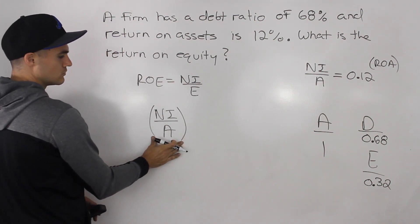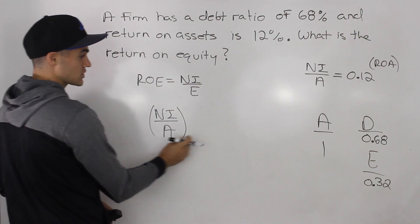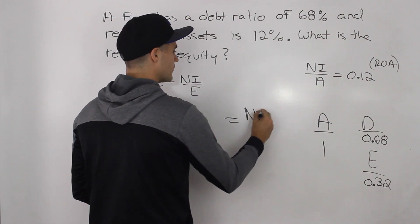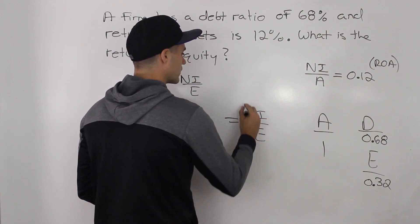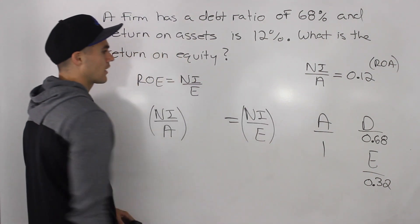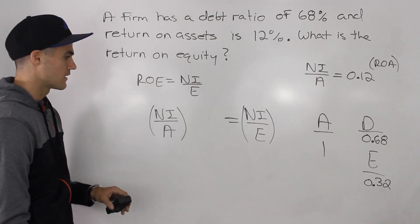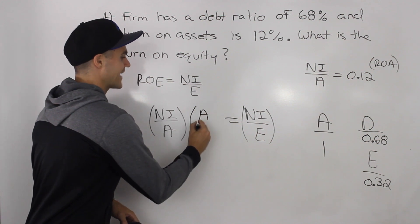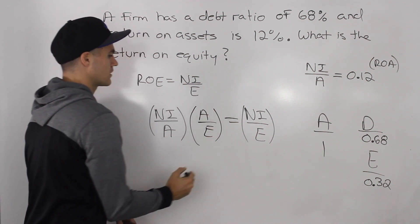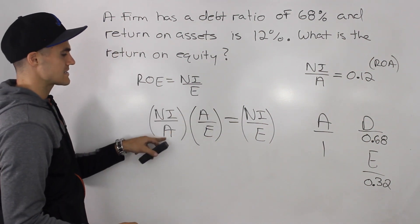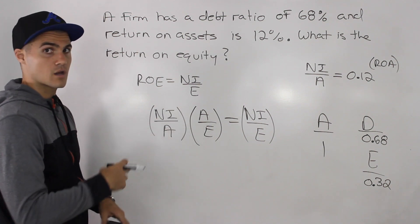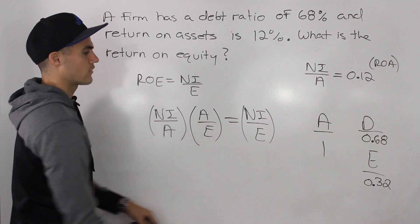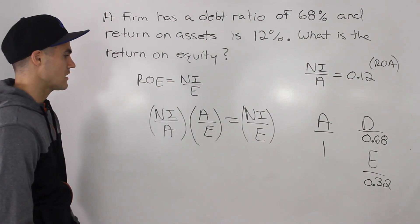So we are given net income over assets. Well, what can we do to this fraction in order to get the fraction that we want, which is net income over equity, which represents the return on equity, which is what we are looking for? Well, we can take this fraction and multiply it by assets over equity. Because notice that the assets in both the numerator and the denominator will cancel out. And then we'll just be left with net income over equity, which is what we are trying to find.